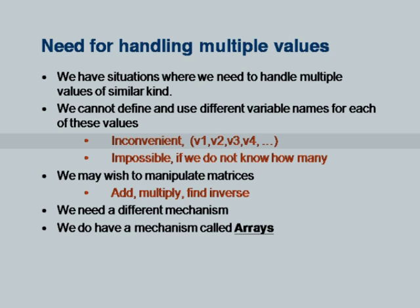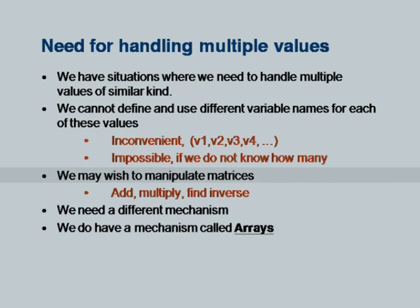We obviously cannot define and use different variable names for each value if they are too large in number or the number is unknown. Firstly, it is inconvenient — how many names will we write? My program will become unwittingly long. Second, it is impossible if we do not know how many variables we have to deal with. Additionally, we may wish to manipulate matrices for numerical computational problems such as simultaneous differential or algebraic equations. We need a different mechanism than simple variables, and that mechanism is called arrays.